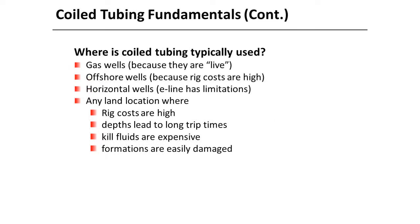So where is coiled tubing typically used? We can use coiled tubing in gas wells because they are live wells. Coiled tubing can be used in offshore wells as rig costs are high. Where electric line and slick line have limitations in horizontal wells, coiled tubing will be the solution. Coiled tubing can also be used in any land location where rig costs are high, depths lead to long trip times for drill pipe, kill fluids are expensive, and formations are easily damaged.